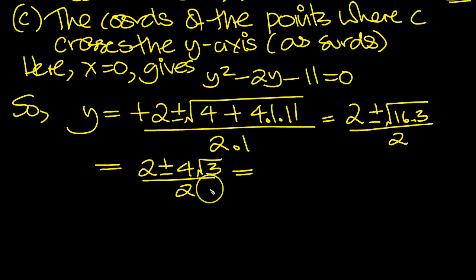So there's two common top and bottom. So we can simply divide by 2 top and bottom all the way through. So we end up with 1 plus or minus 2 root 3.